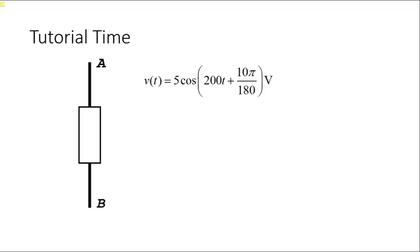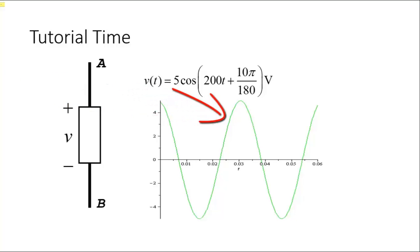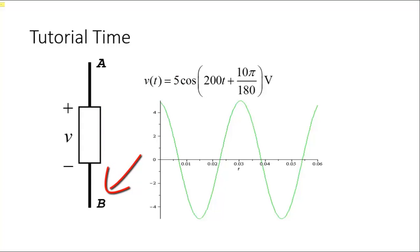What about the voltage? Here is the voltage in that element — another sinusoid. Different amplitude: 5 volts. Same frequency, different phase shift: 10 degrees. It looks like this. Sometimes it's positive, sometimes it's negative — that is, sometimes A is higher than B, and sometimes A is lower than B. Another convention: the plus and minus signs tell us that when the curve is positive, side A is higher than side B.